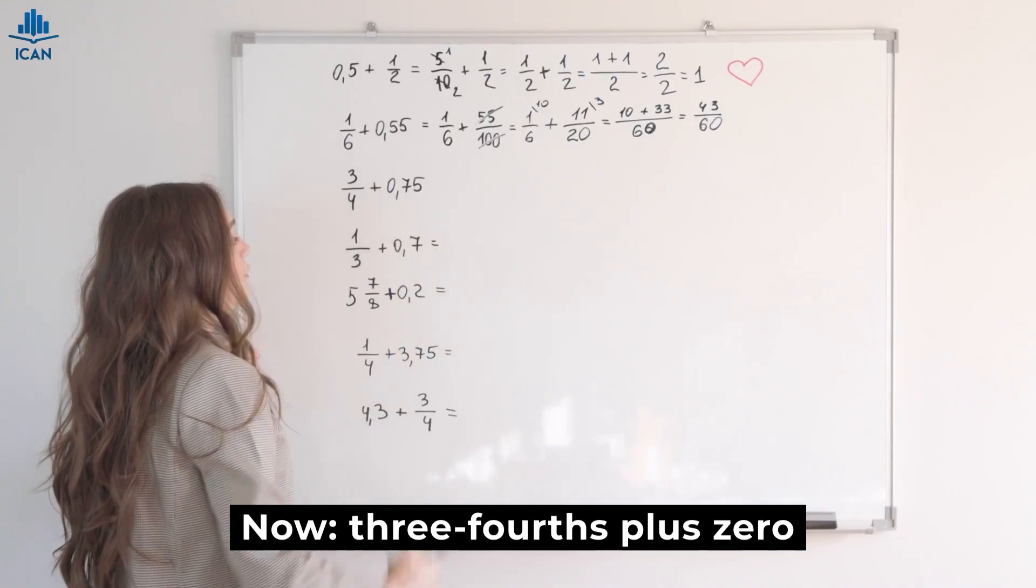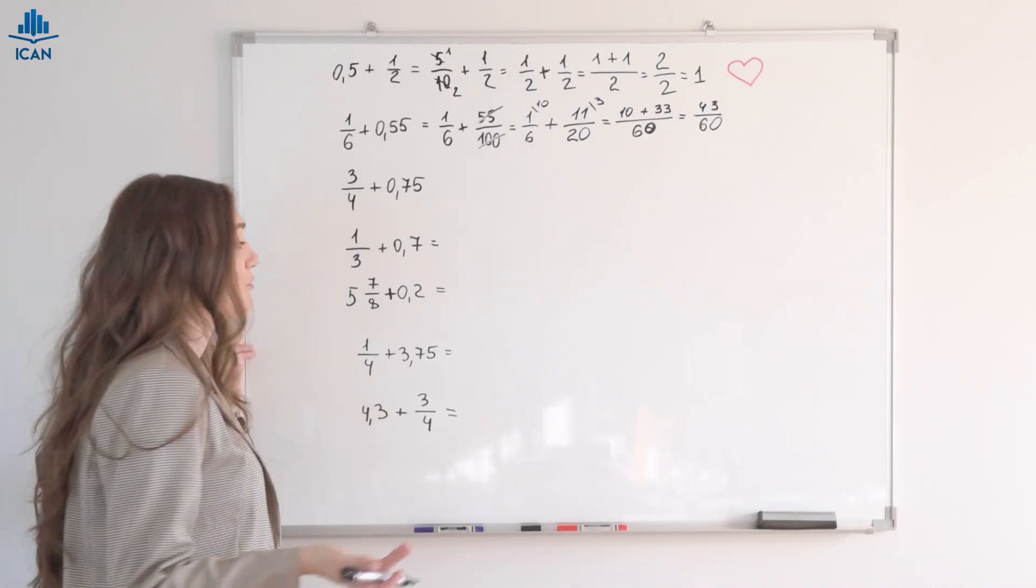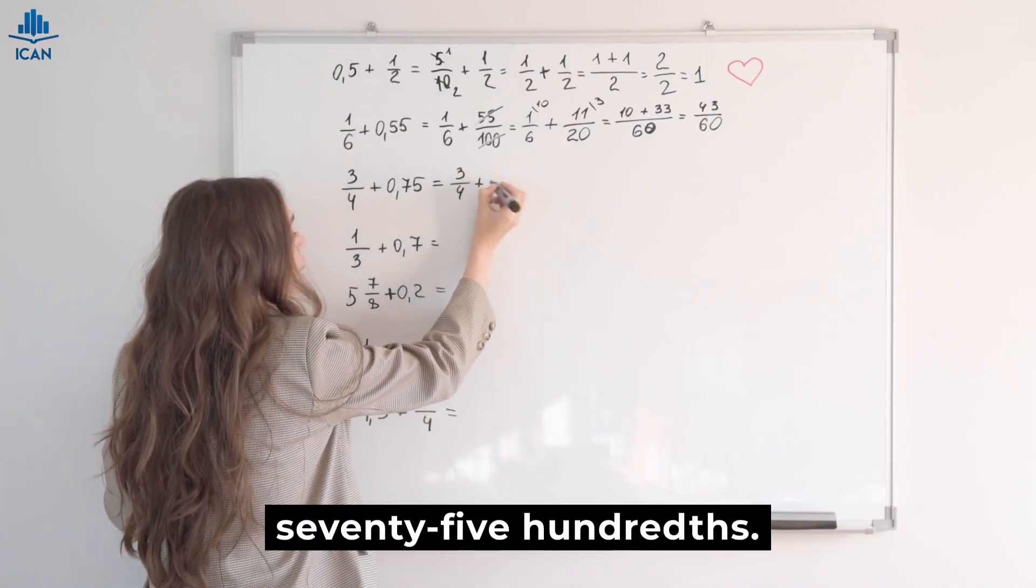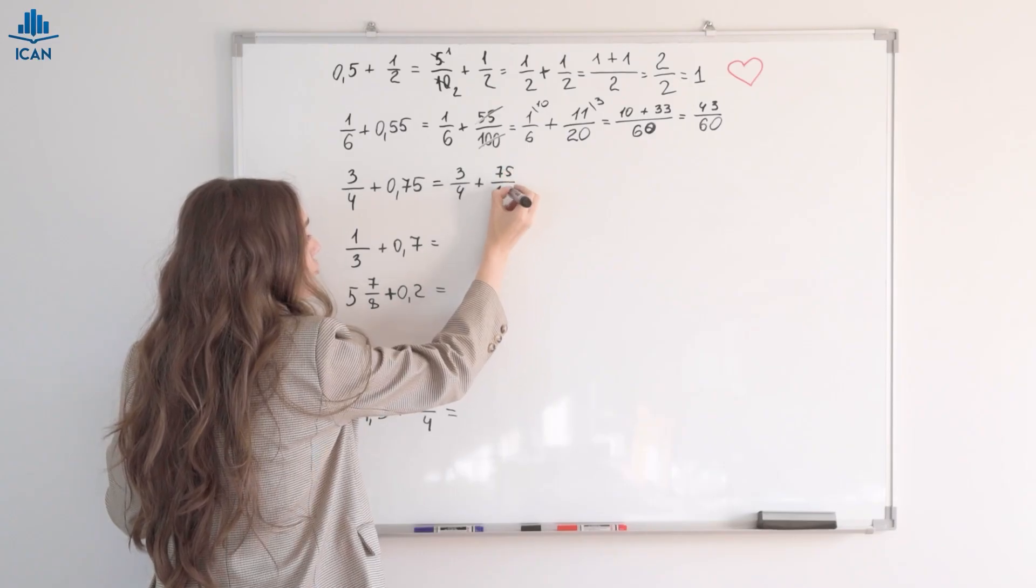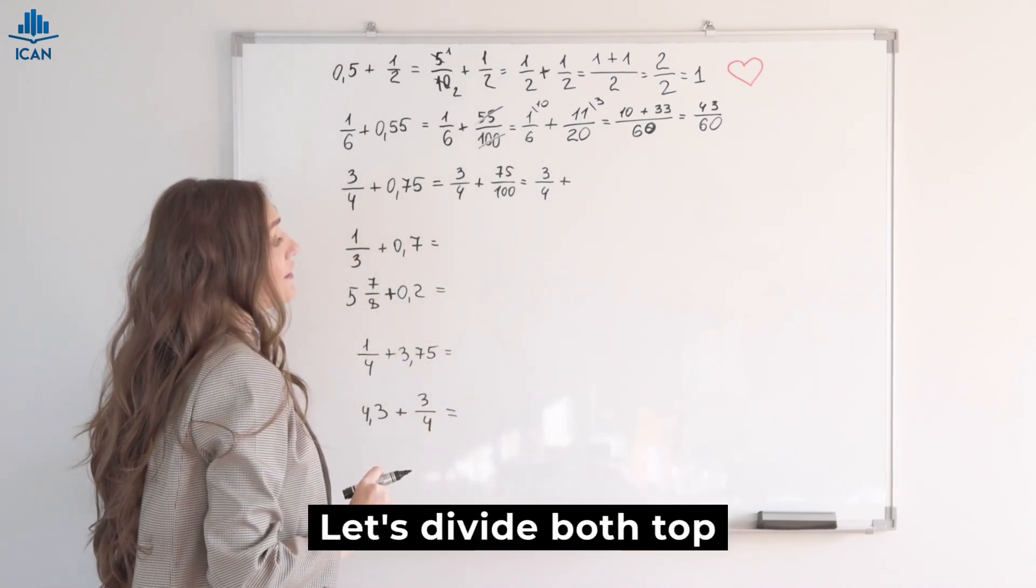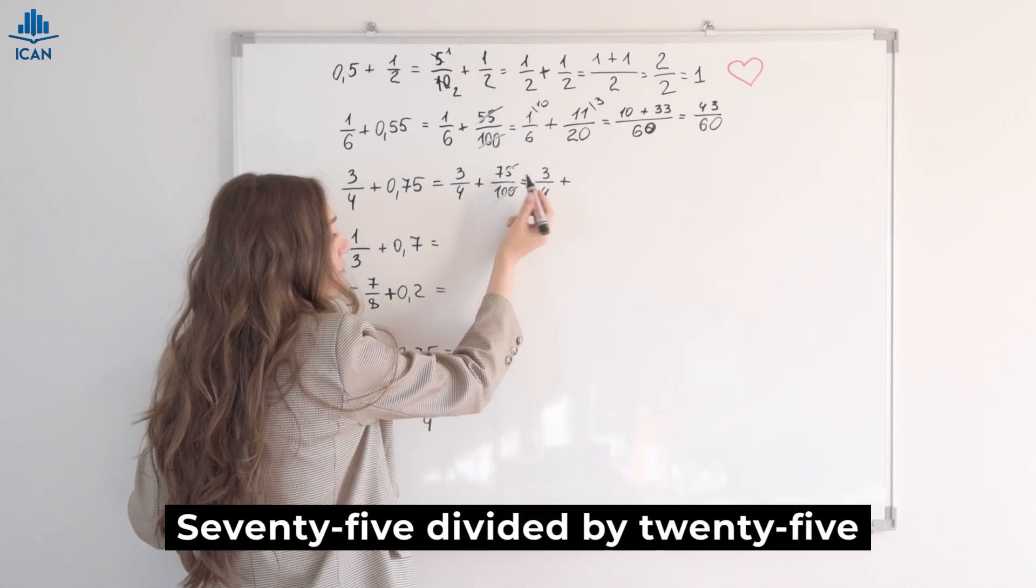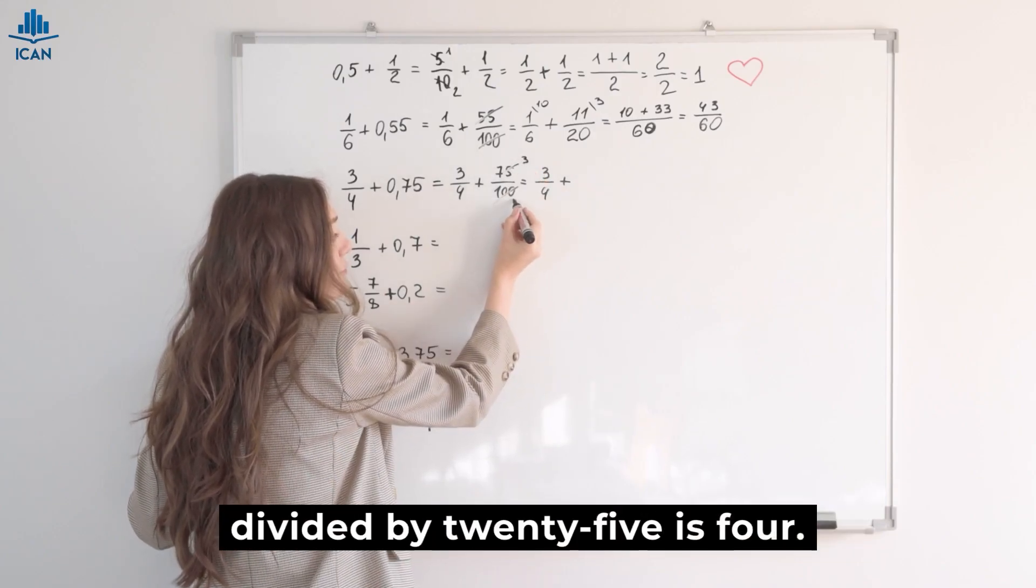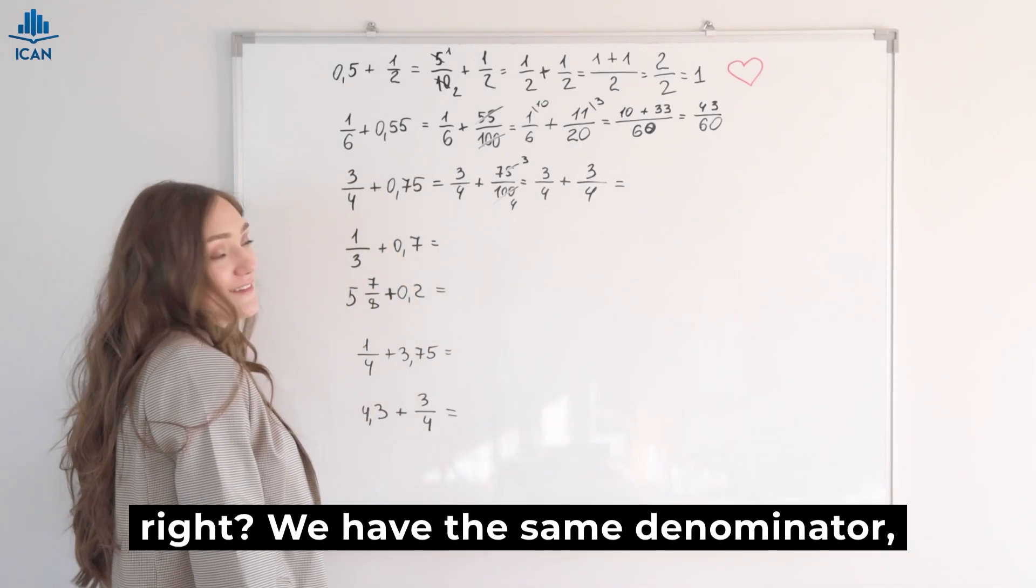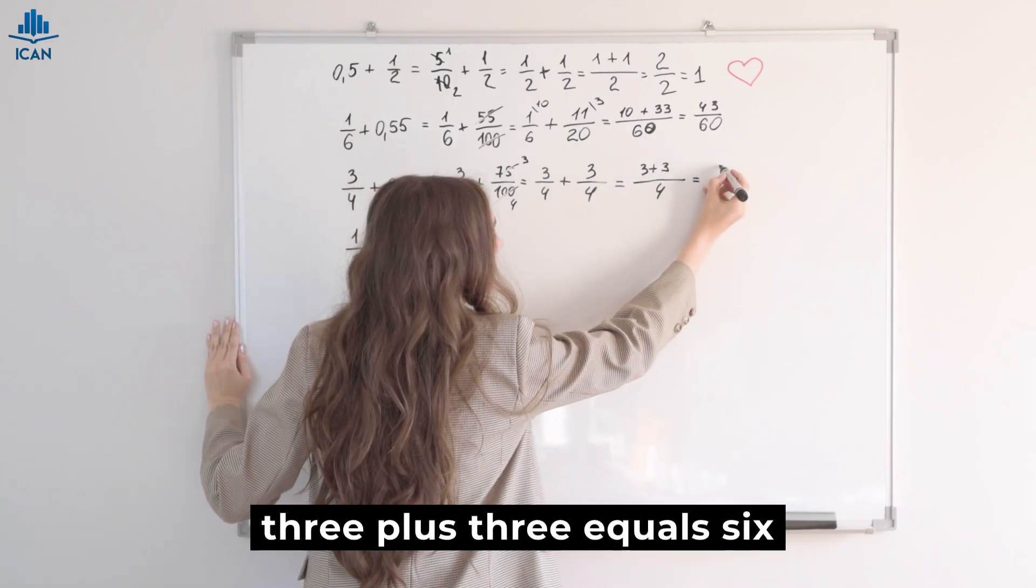Now, three-fourths plus 0.75. You probably already guessed that three-fourths equals 0.75. But we need to prove it. So, three-fourths plus seventy-five hundredths. We rewrite and divide. Let's divide both top and bottom by twenty-five, both numerator and denominator. Seventy-five divided by twenty-five is three. One-hundred divided by twenty-five is four. Three-fourths. We add them up, right? We have the same denominator, so no problem at all. Four, three plus three equals six-fourths.